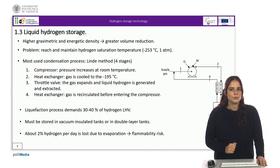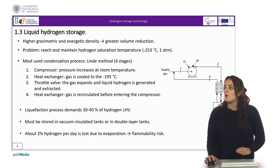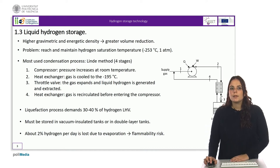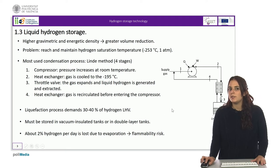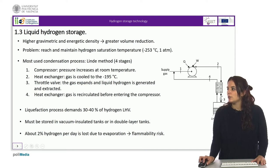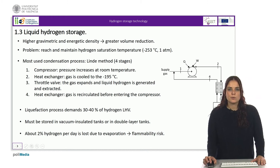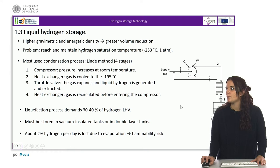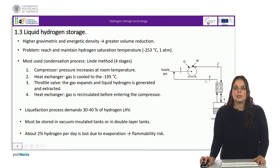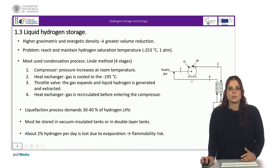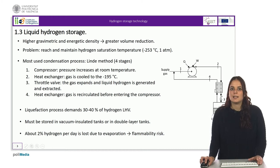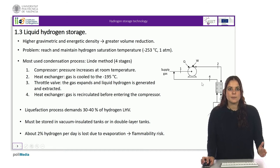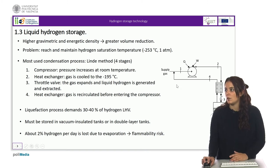The Linde cycle, or Joule-Thomson expansion cycle, consists of four stages. In the first step, the gas passes through a compressor where its pressure increases at room temperature. Then the gas is cooled in a heat exchanger to the temperature of liquid nitrogen, that is minus 195 degrees Celsius. Later on, the gas is passed through a throttle valve and as it expands to constant enthalpy, liquid hydrogen is generated and extracted from the cycle. The last stage consists of recirculating the remaining gases and heating them in the same counter-current heat exchanger before entering the compressor again.